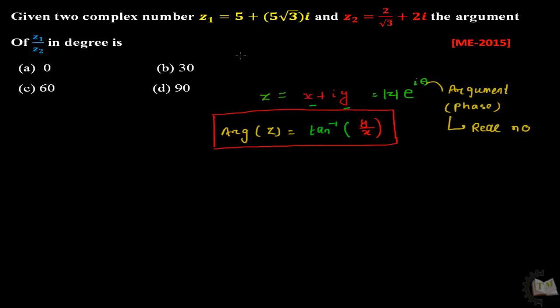Next, go to the question. In the question it is given that there are two complex numbers, one is Z1 and another is Z2. We have to find out the argument of Z1 divided by Z2. First write down argument of Z1 divided by Z2, which equals, there is a formula, you can write it as argument of Z1 minus argument of Z2.